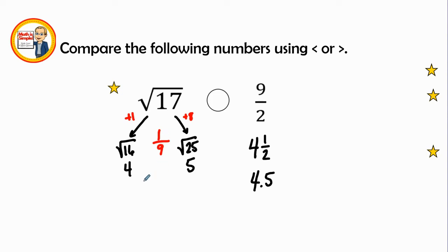So our approximate value of radical 17 is 4 and 1 9th. Now 1 9th is .111 bar. And so it is approximately 4.1 bar. So if we look at this 4.1 bar, 4.5, it looks like radical 17 is also going to be less than 9 over 2.